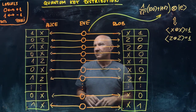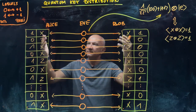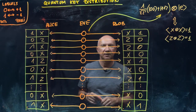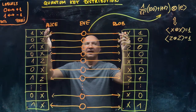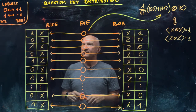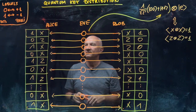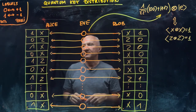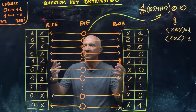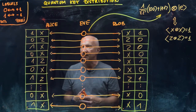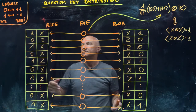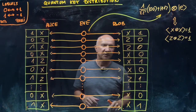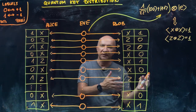They are going to reveal publicly the types of measurements they used for each incoming qubit, but they will not reveal the outcomes of the measurements — that's important. So after the public communication, everyone will know that Alice and Bob measured XX in the first round, ZZ in the second round, then Alice measured X and Bob measured Z in the third round, and so forth. Nobody knows the outcomes that Alice registered apart from Alice, and nobody knows the outcomes Bob registered apart from Bob.